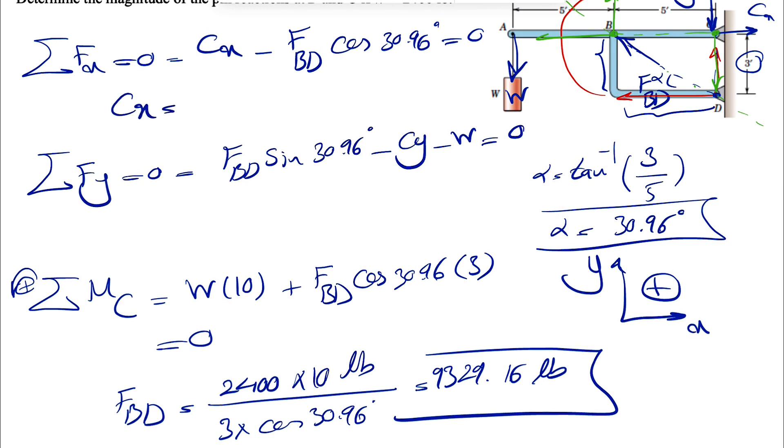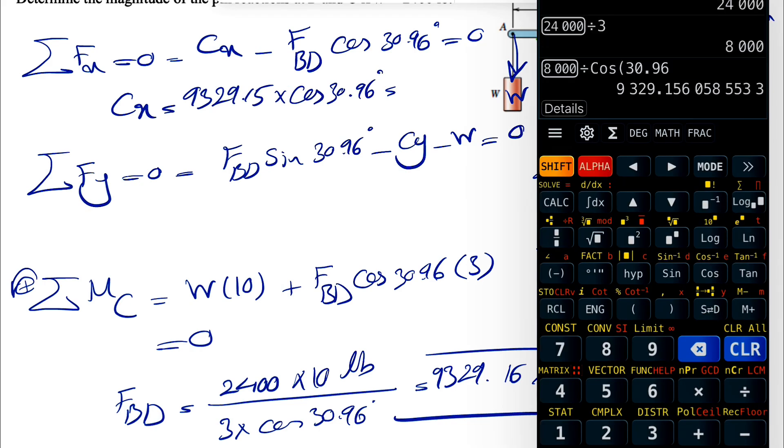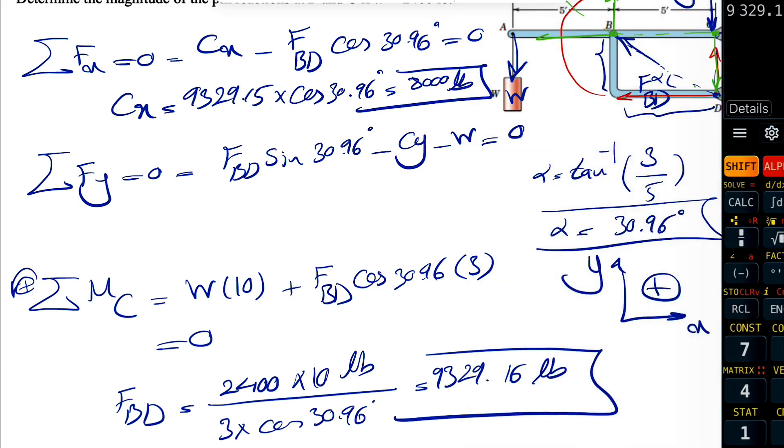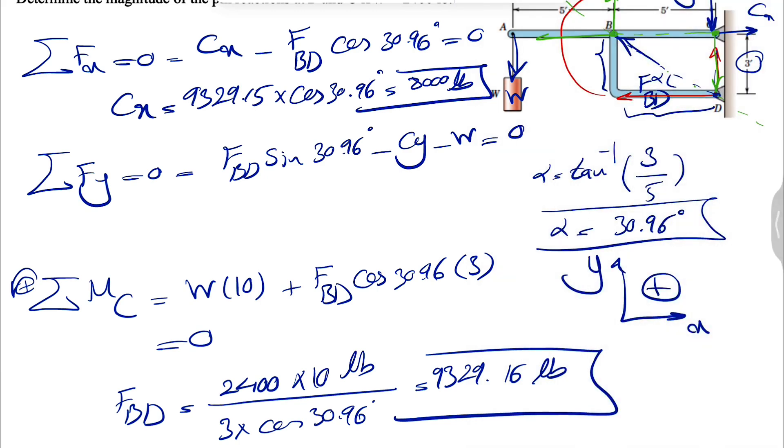That's our FBD. And we just have to put our FBD in the first and second equation to find the CX. So here, CX will be FBD cosine of 30.96. This is going to give us around 8,000 pounds for CX. No negative sign that shows that that's the correct direction for CX.